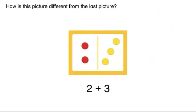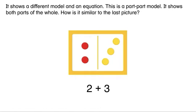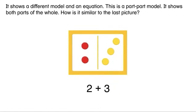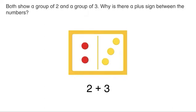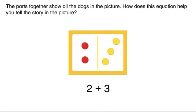How is this picture different from the last picture? It shows a different model and an equation. This is a part-part model. It shows both parts of the whole. How is it similar to the last picture? Both show a group of two and a group of three. Why is there a plus sign between the numbers? The parts together show all the dogs in the picture.